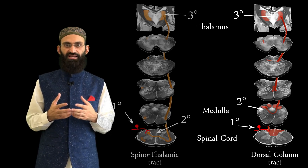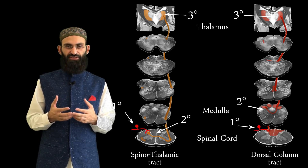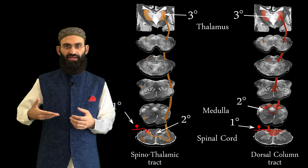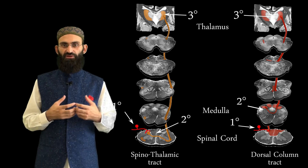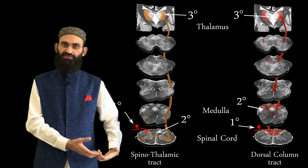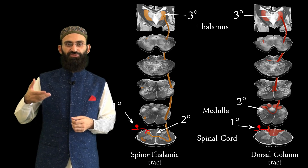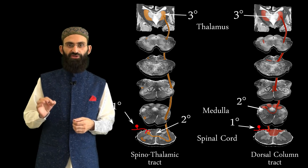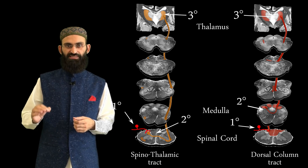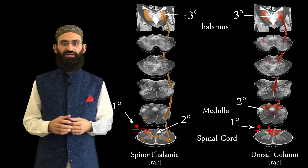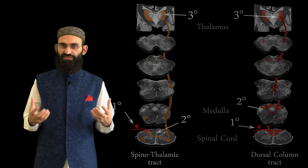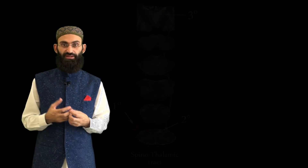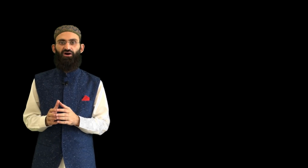To summarize: damage to the right spinothalamic tract causes loss of pain and temperature sensation on the left side, while damage to the right dorsal column tract causes loss of vibration and proprioception on the same right side. This concludes the brief overview of neuroanatomy and the ascending and descending pathways. Further details on hemiplegia and paraplegia will follow.